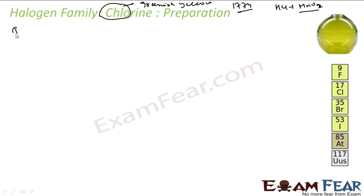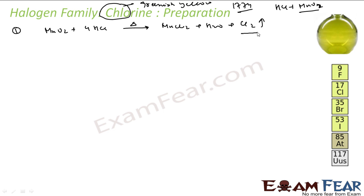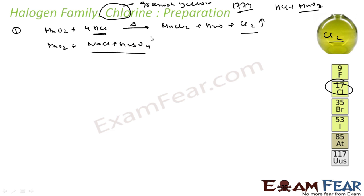In the lab, if you want to prepare chlorine, you heat MnO2 with concentrated HCl. You get MnCl2, some water, and chlorine gas. Instead of HCl, you can also use NaCl and H2SO4 combination with MnO2 — because this is a replacement of HCl. On heating, you get MnCl2, NaHSO4, some water, and again chlorine gas.